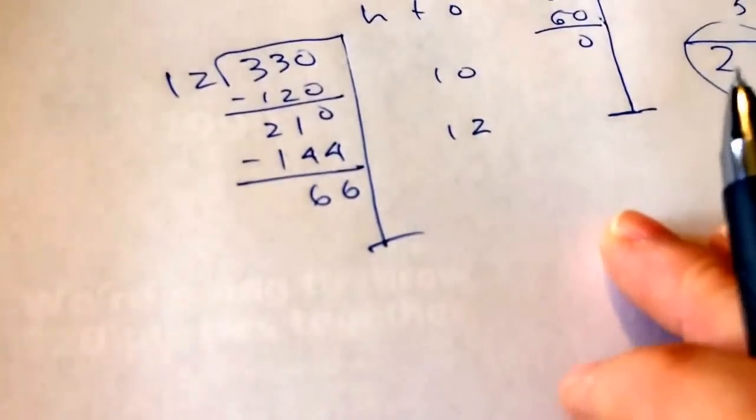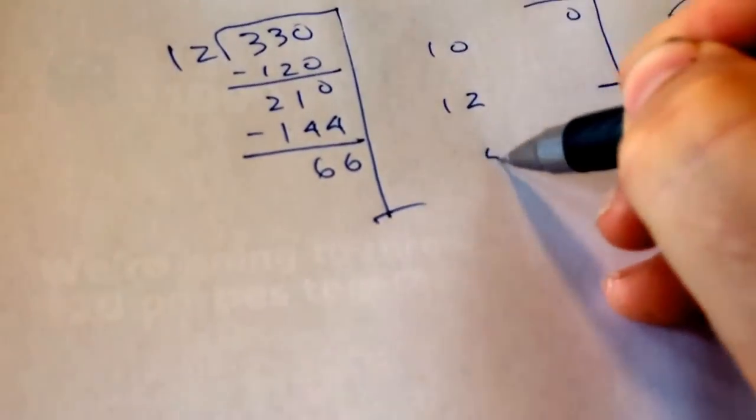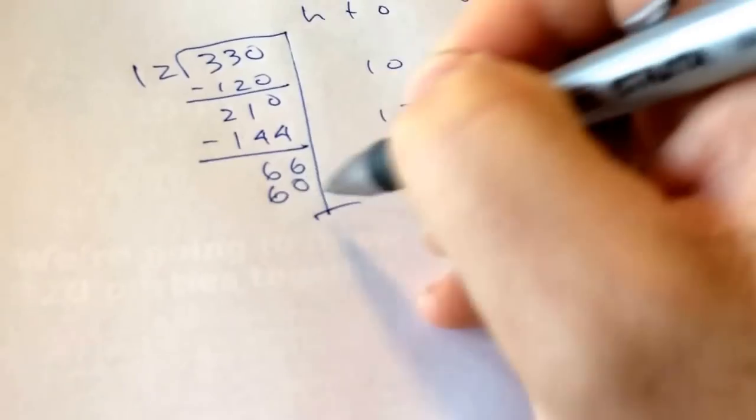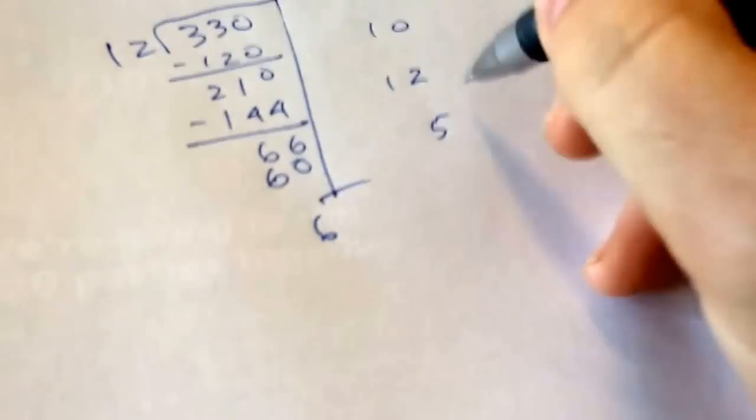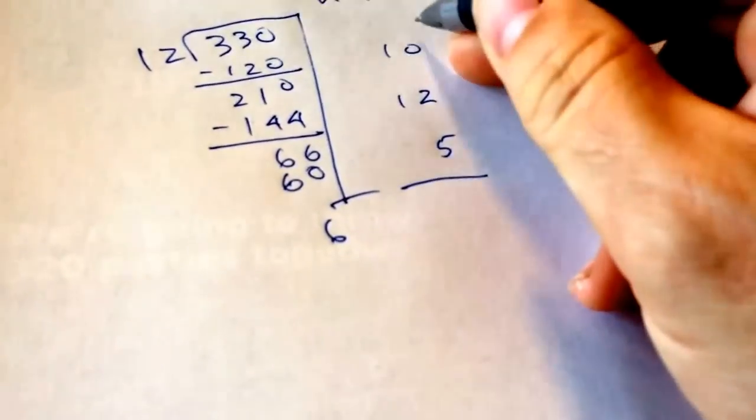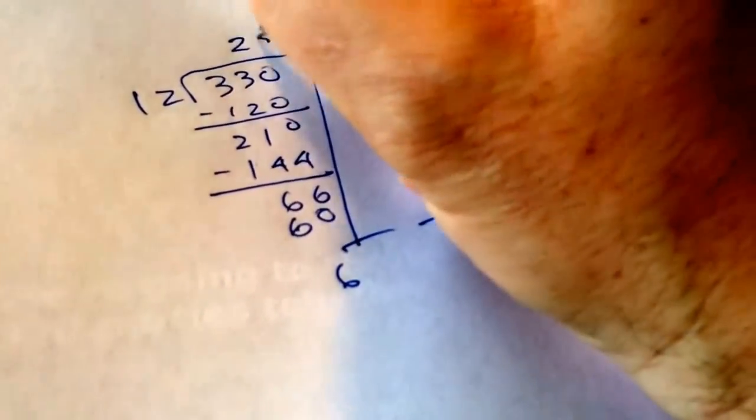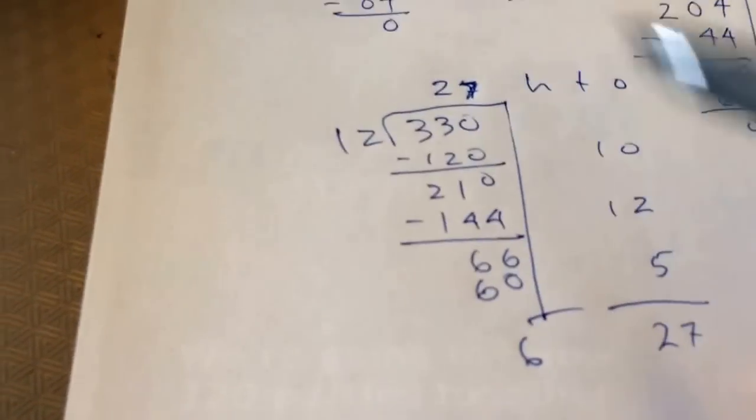The student scratches his head. He goes, oh, wait, wait. 5 goes into that. So, we write our 5. And 12 times 5 is 60. And then we end up with this remainder of 6. So, we still end up adding these together to get 27. But now we have a remainder.